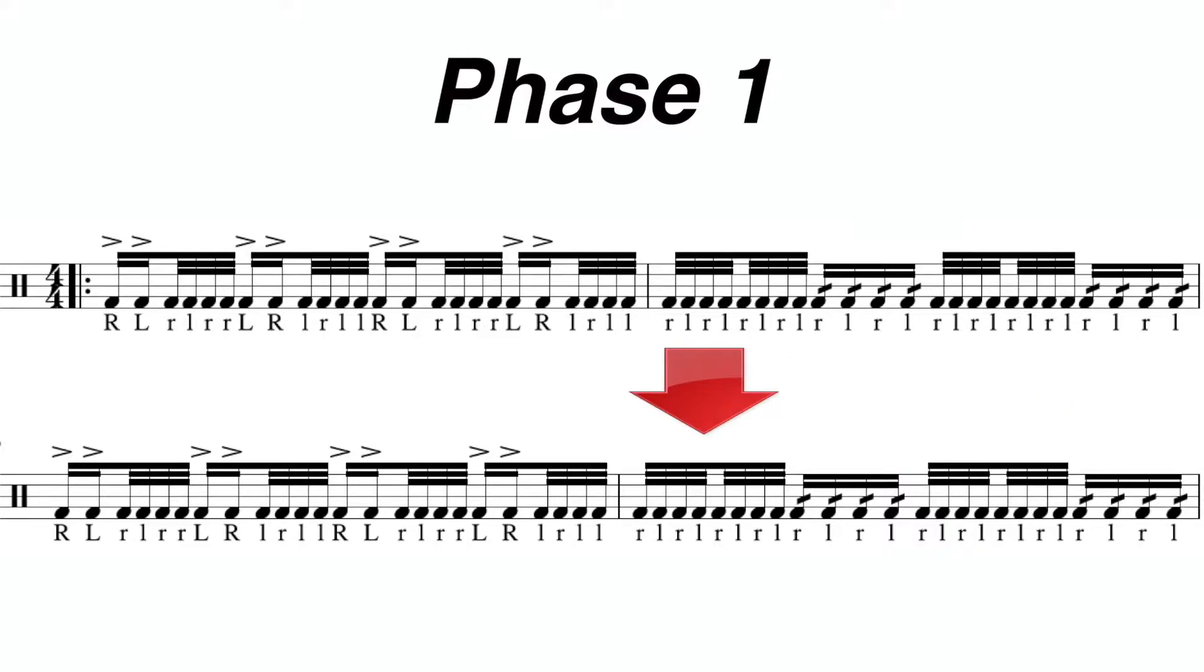for count 1, you're going to play 32nd note single stroke rolls. Count 2, you're going to play 32nd note double stroke rolls. And then count 3, single strokes. Count 4, double strokes.